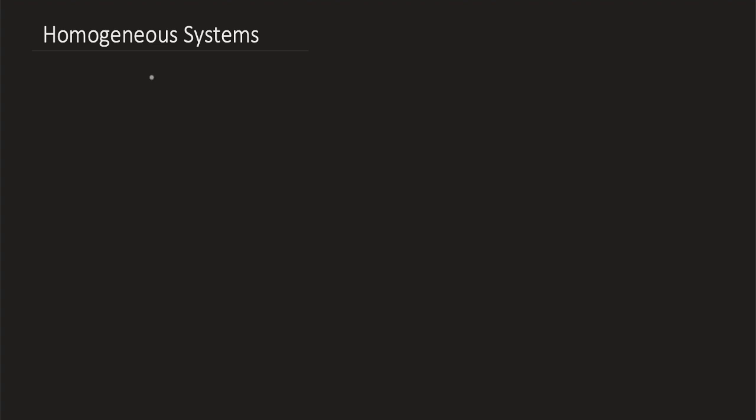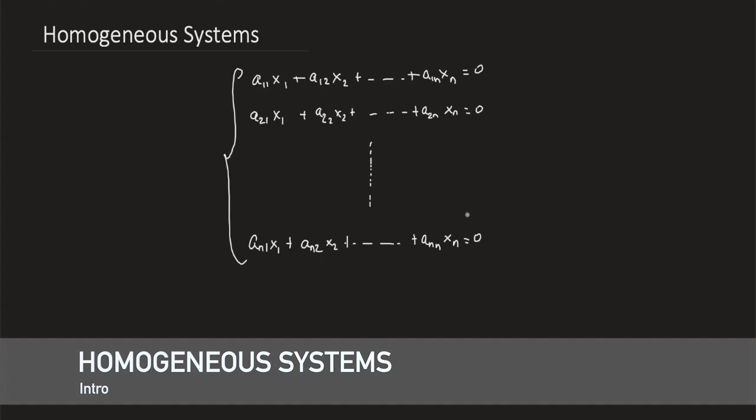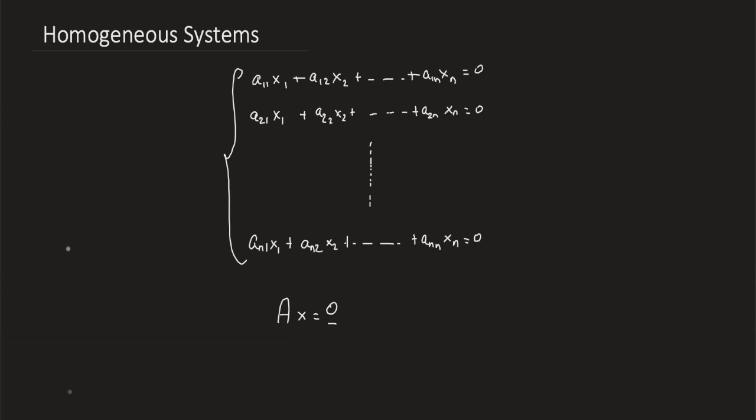An n-by-n system of homogeneous linear equations has the form Ax equals the zero vector, where A is the matrix of coefficients.